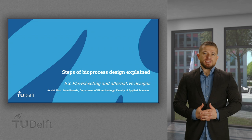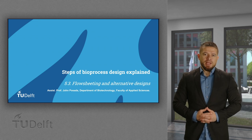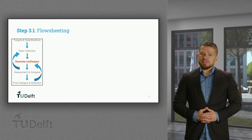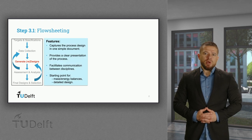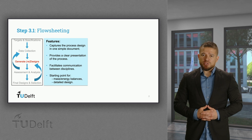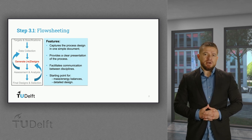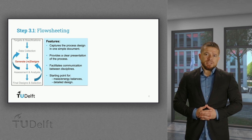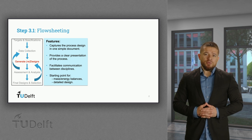Welcome to this lecture on flow sheeting and alternative designs. This is all part of step 3: generate designs and redesigns. Flow sheets are handy tools to quickly understand the process, since they capture the most important elements of the process design in a simple, clear and visual document, which also facilitates communication between different disciplines, for example technology developers and process engineers. Even more importantly, they are the starting point for mass balances, energy balances, and detailed design.